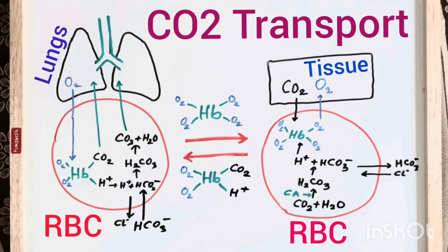Now let us look into the three forms of carbon dioxide — that is to say, how carbon dioxide is transported from the tissues to the lungs and finally exhaled into the atmosphere. The bulk 80% combines with water to form H2CO3, i.e. carbonic acid.